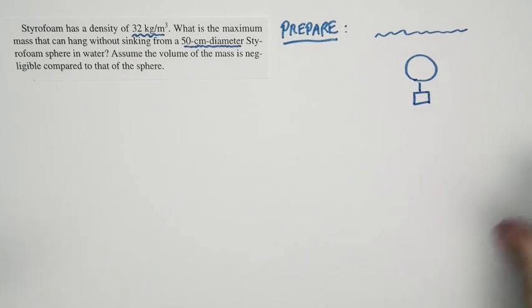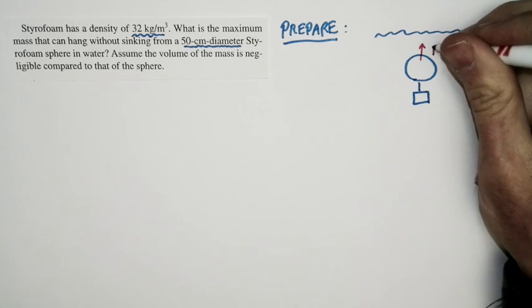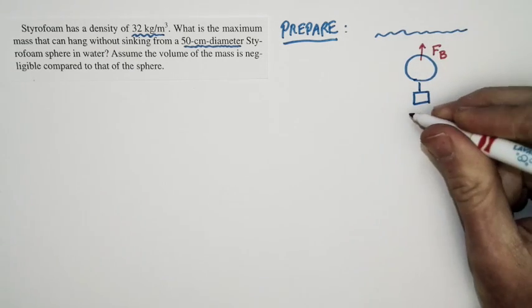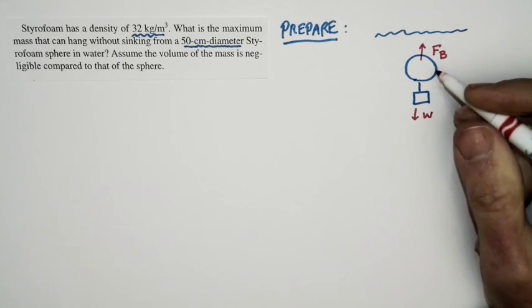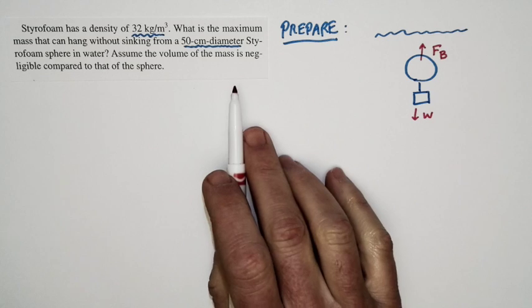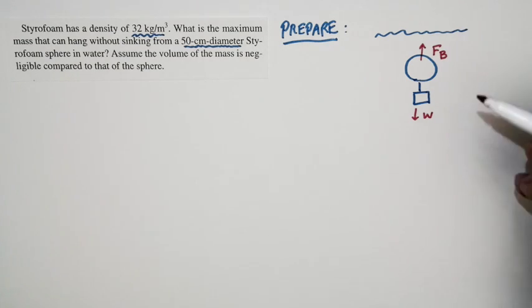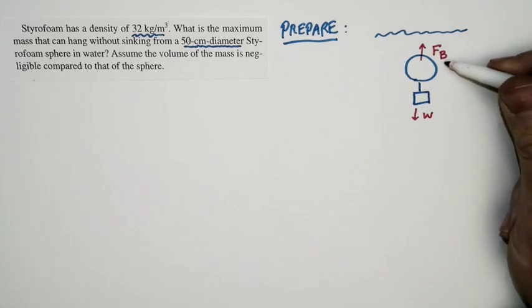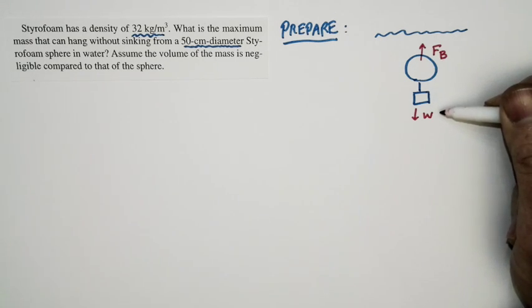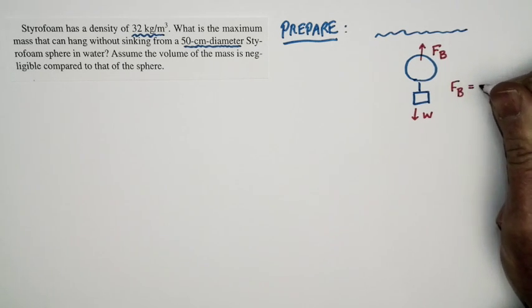There's an upward buoyant force due to the displacement of the water. There's a downward weight force on both of them. We're told that we're looking for the maximum mass that can hang without sinking. So if it's the maximum mass that can hang without sinking, I'm assuming that the buoyant force is just equal to the weight force. The buoyant force is just equal to weight.